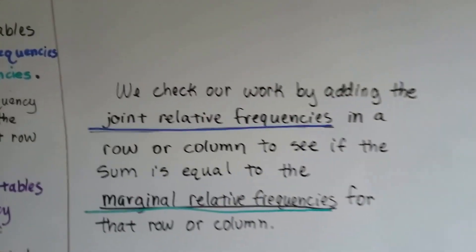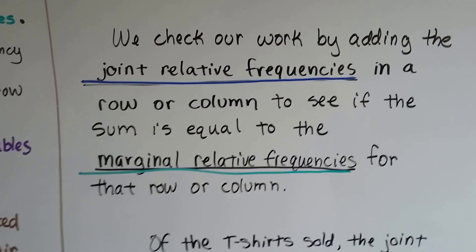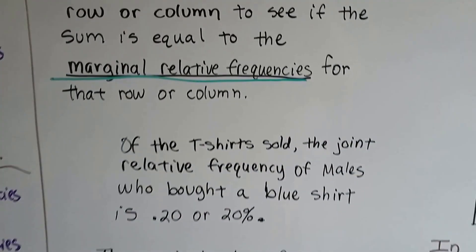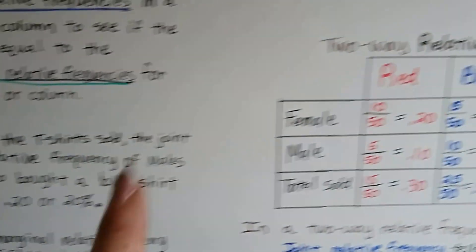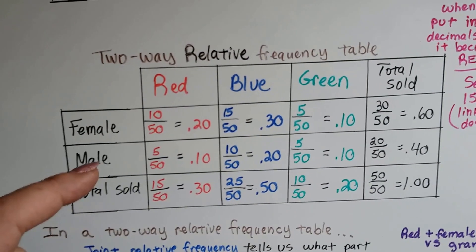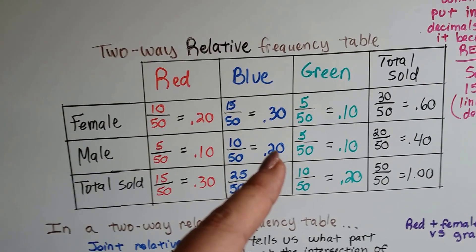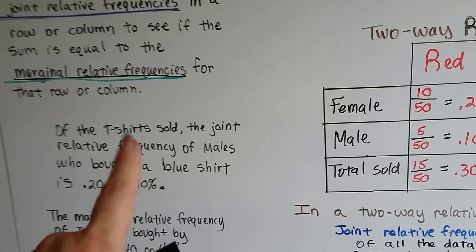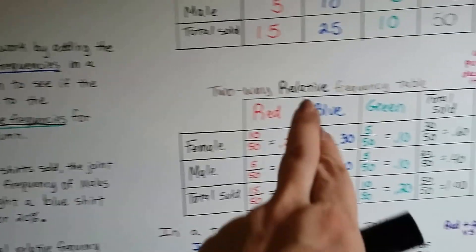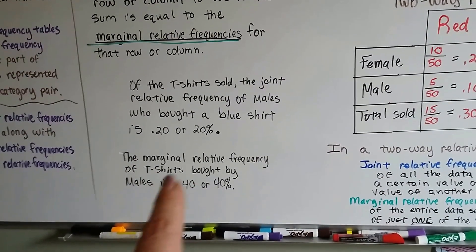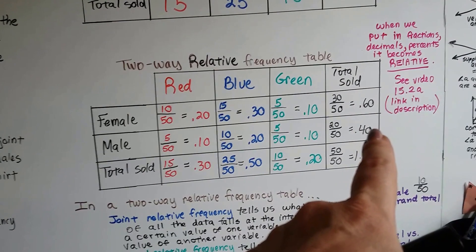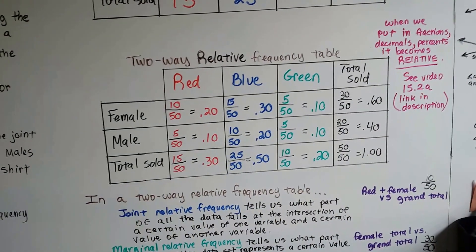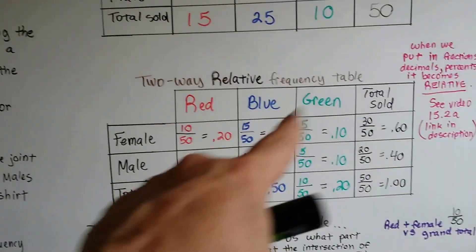We check our work by adding the joint relative frequencies in a row or column to see if the sum equals the marginal relative frequency for that row or column. Of the t-shirts sold, the joint relative frequency of males who bought a blue shirt - here's male and here's blue shirt - is 20% or 0.20 or 10 over 50. That's the joint relative frequency; it's up here on the inside, not along the margin. The marginal relative frequency of shirts bought by males is 40% - here's males and the total is 0.40. See how it's along the margin? That's the marginal relative frequency.